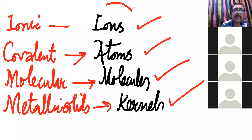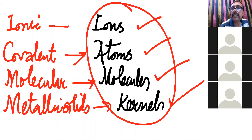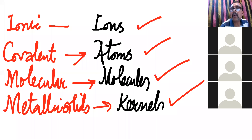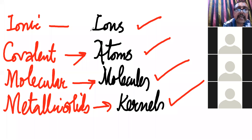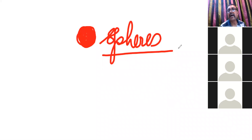So these are the four types of constituent particles. When we concentrate on particles — whether ionic, covalent, molecular, or metallic — all of these particles, if any particle is known as a sphere, they are regarded as spheres.